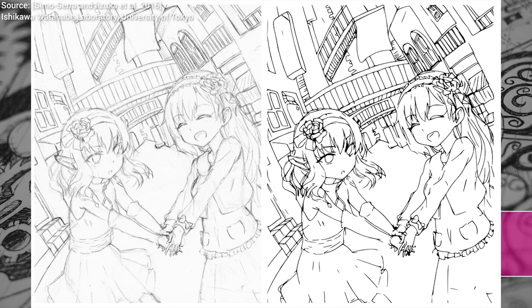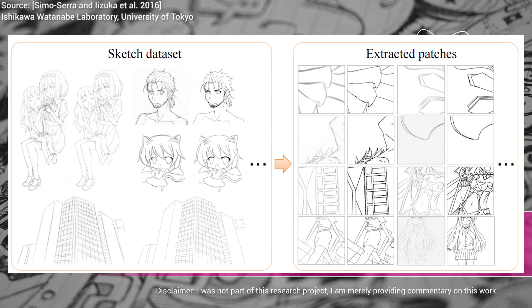In each of these cases, it is absolute insanity how well it works — just look at these results. The next question is obviously: how does this wizardry happen? It happens by using a classic deep learning technique — a convolutional neural network — that was trained on a large number of input and output pairs.